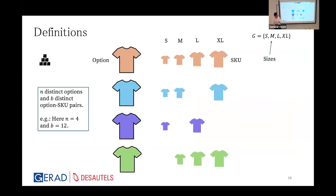We introduce an option as a specific sewing pattern in a specific color; an option can be available in different sizes, each called an SKU. Depending on the sizing system G — for example a four-size system of small, medium, large, and XL — it can be available in each of them. There are N distinct options and B distinct option-SKU pairs in the inventory.